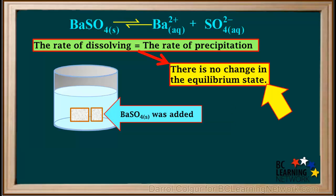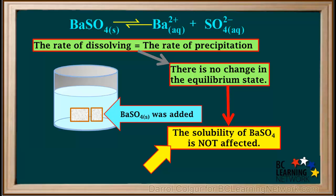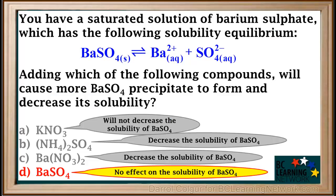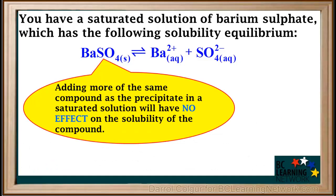So when solid BaSO4 is added to a saturated solution of BaSO4, there is no change in the equilibrium state. Therefore, the solubility of BaSO4 is not affected. We can say that adding solid BaSO4 will have no effect on the solubility of BaSO4. It is important to remember that adding more of the same compound as a precipitate in a saturated solution will have no effect on the solubility of the compound.